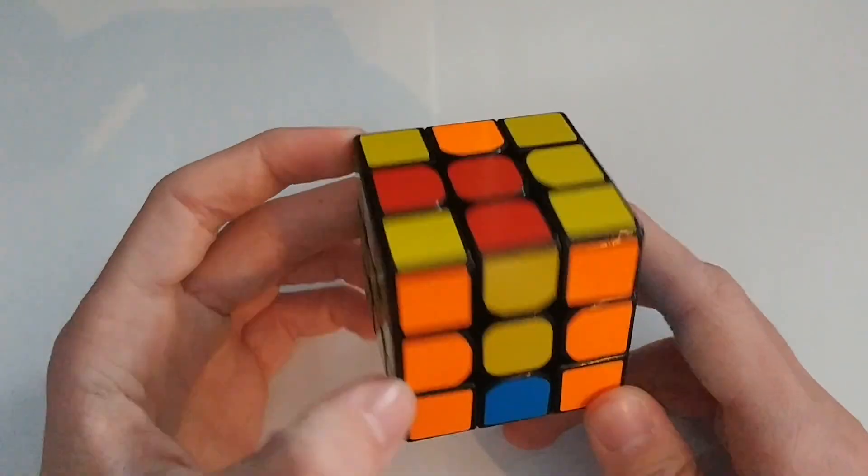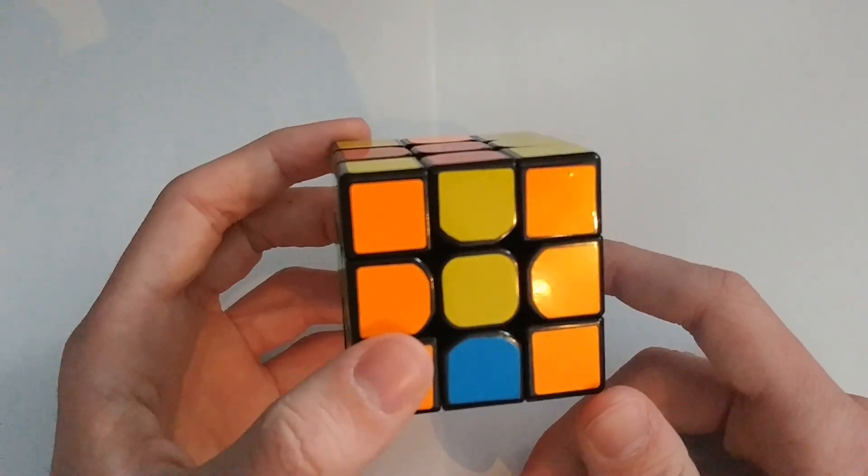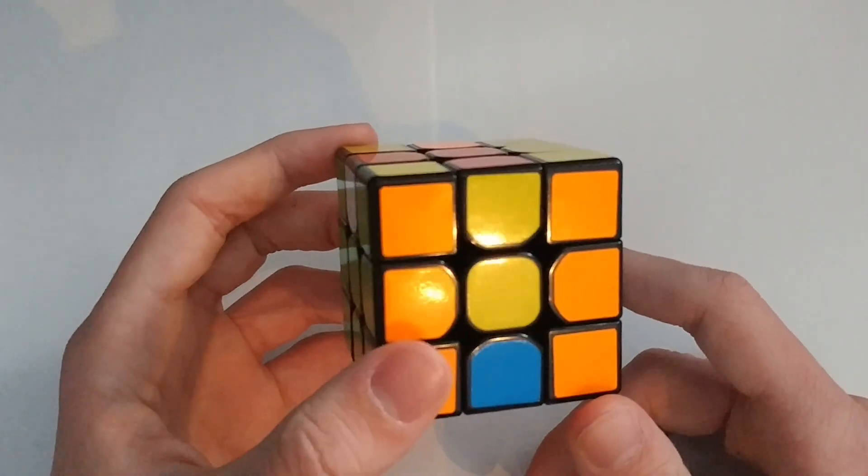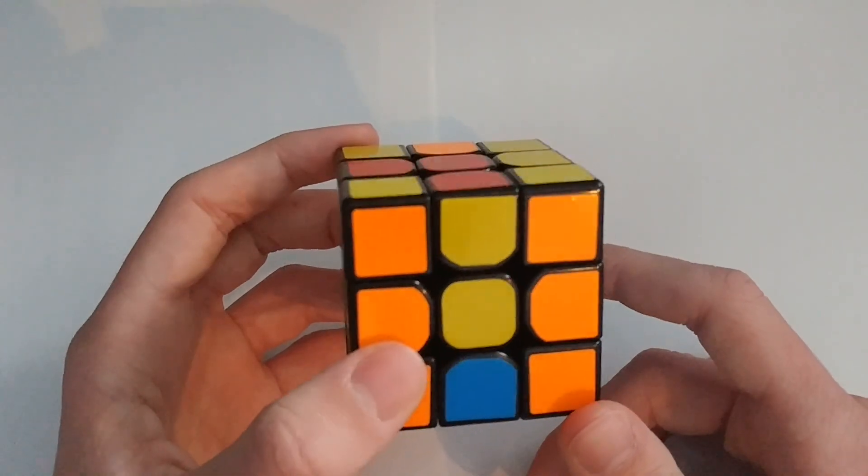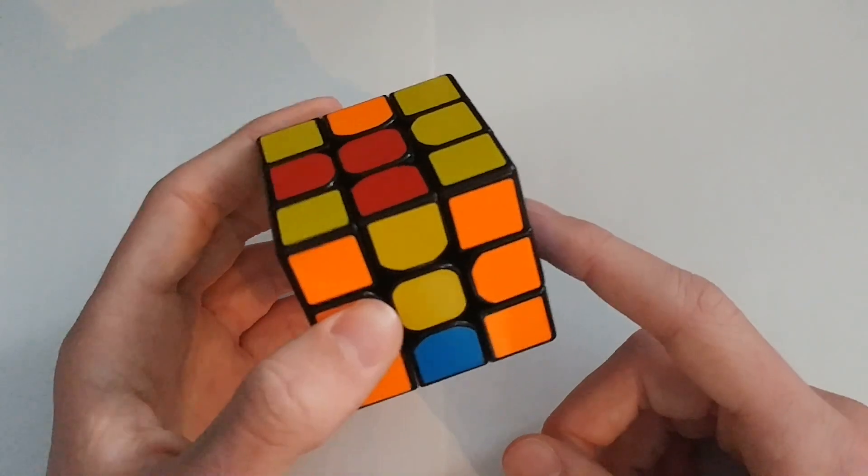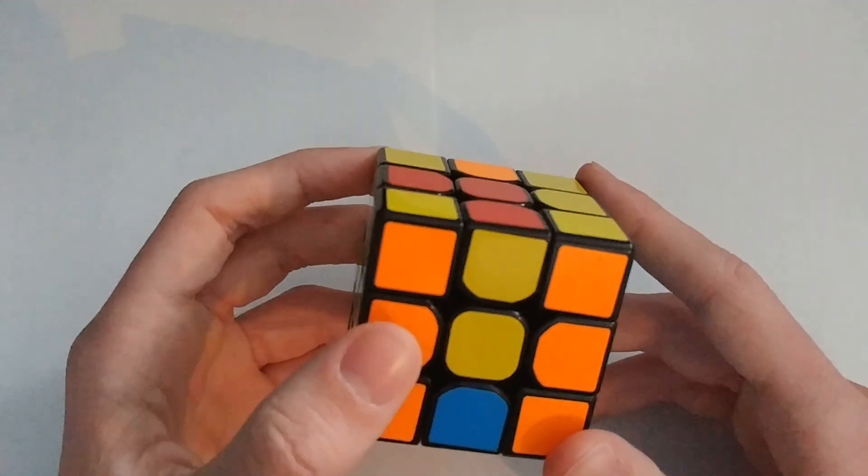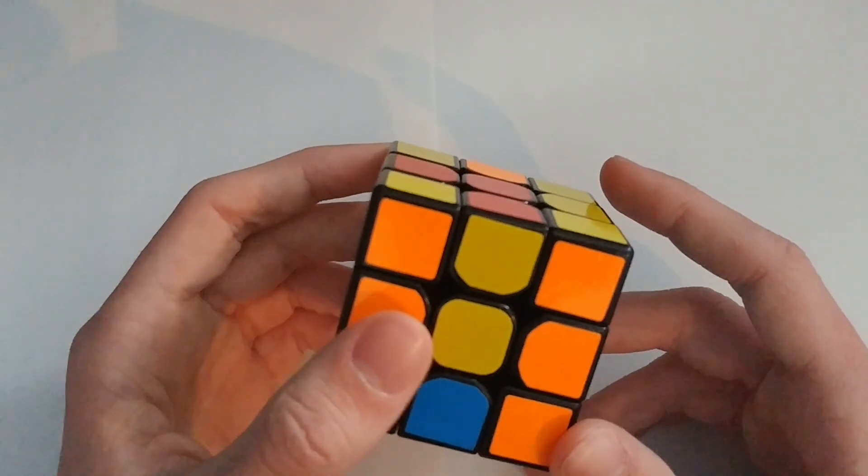If you're transitioning from CFOP to Roux, then you probably already know 2-look OLL and you can use those algorithms for the orientation cases, but there are a lot more efficient ones that you can use and I would recommend using them instead. They're not that hard, they're easier because they're more efficient, and I'll be showing you all of those cases today.